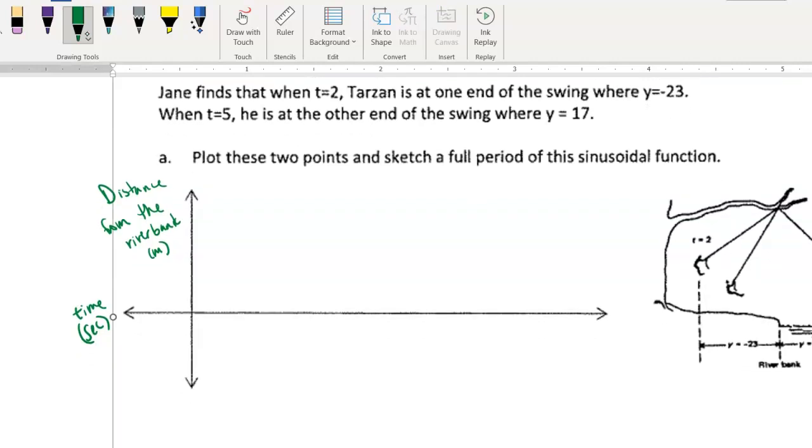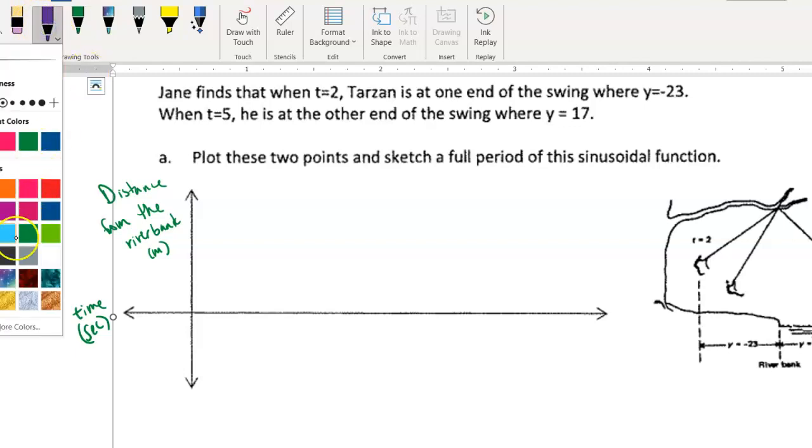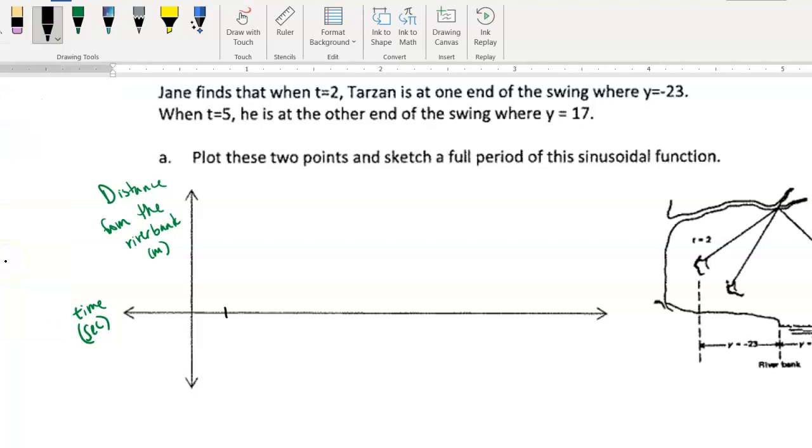All right, so they tell us that after two seconds, so when T is 2, so let's put some dash marks on the X axis here. One, two, three, four, five, six, seven, eight, I don't know how many to do. We'll just do, looks like I got 11 in there. And then on the Y axis, well, let's just wait with the Y axis because they tell us after two seconds, the swing is going to be at negative 23.